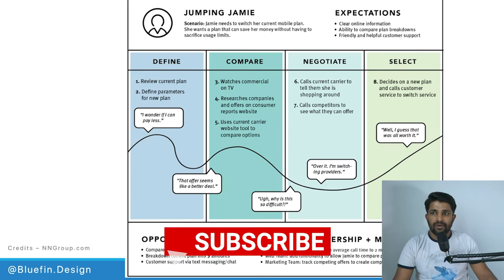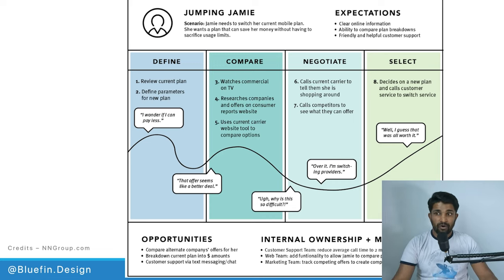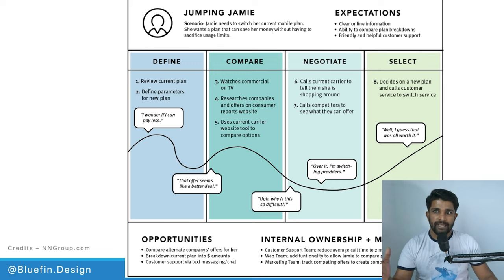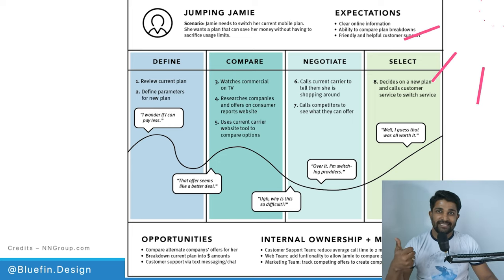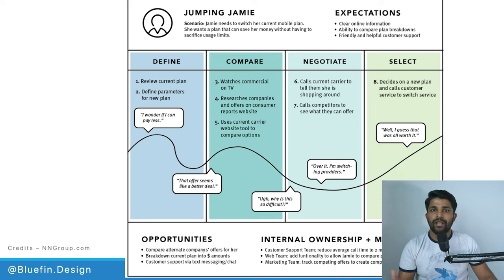Here is an example of a good structure of what a journey map should look like — credits to Nielsen Norman Group for compiling this image. On the top, you can add a photo and give a name to that particular persona. You bring the persona in on the top left. And you give a scenario — what this journey is about, what the user is actually doing — and some of the expectations of the user, like what they're expecting or what their goals are while performing these tasks.